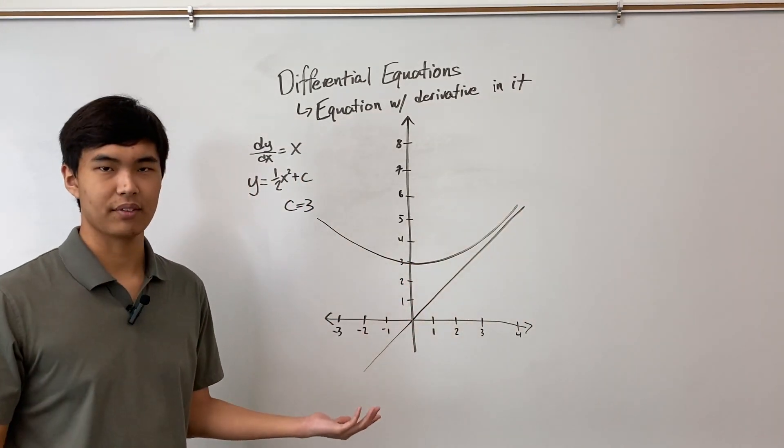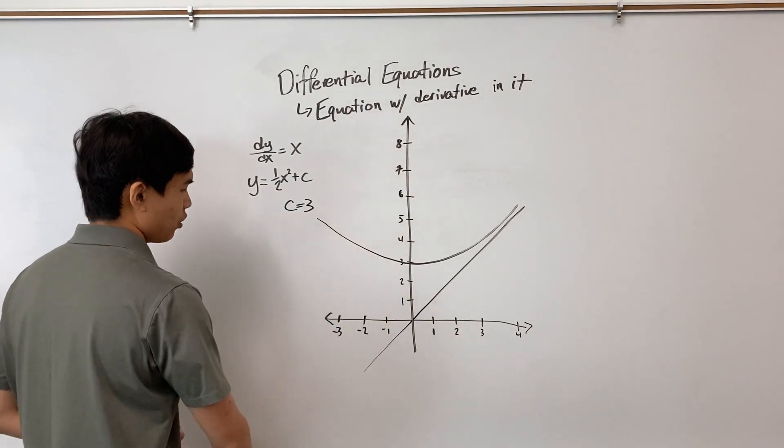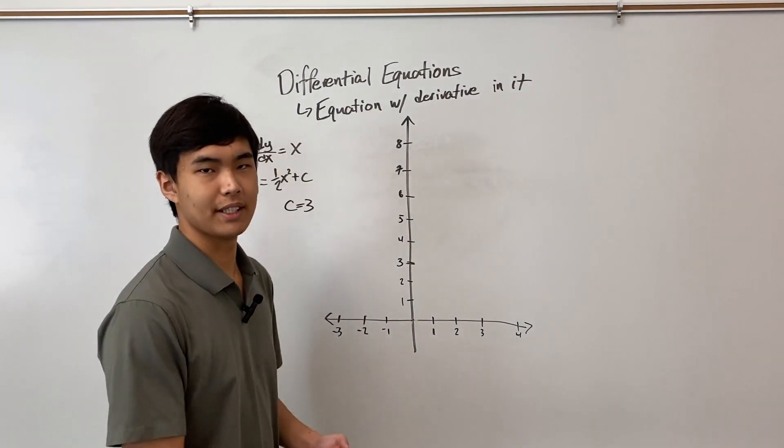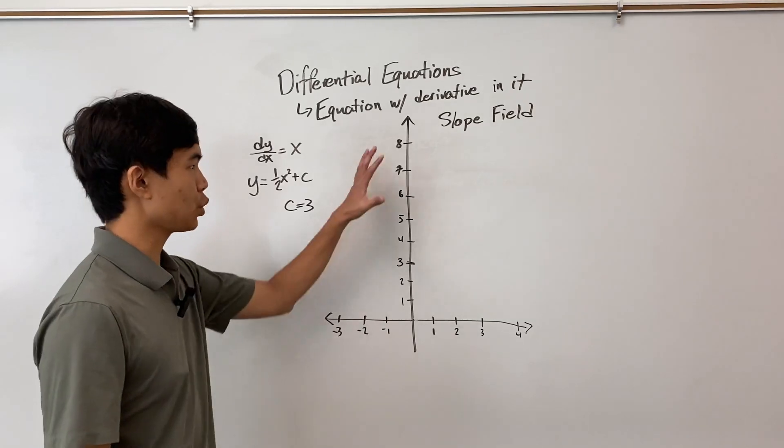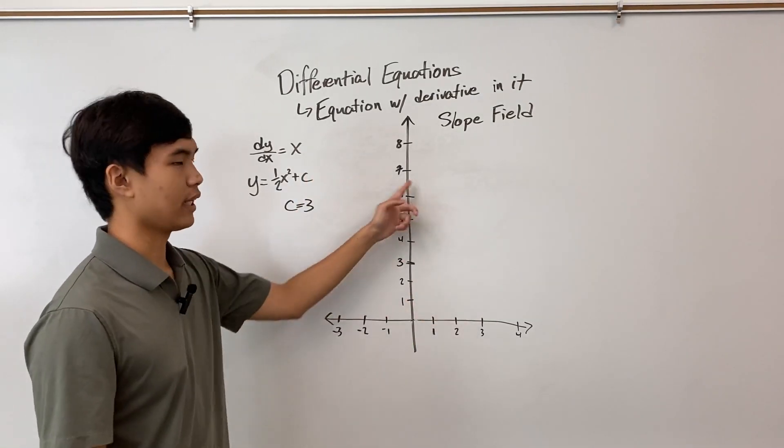Just looking at this graph, it's not really super obvious or super helpful how they're related. So we draw another type of graph. This type of graph is a slope field. A slope field is a visual representation of this derivative at every point in the xy plane.